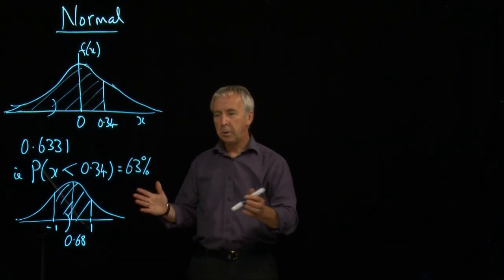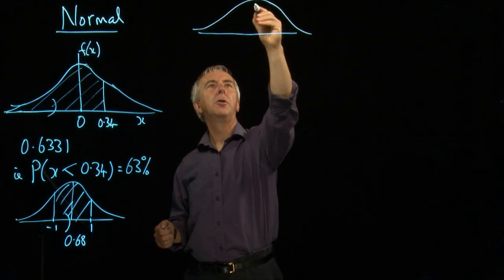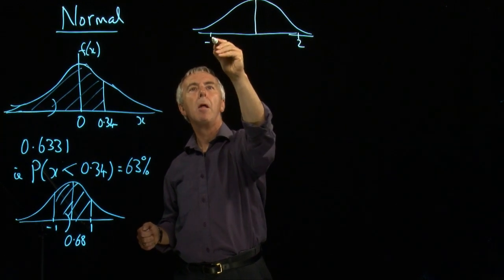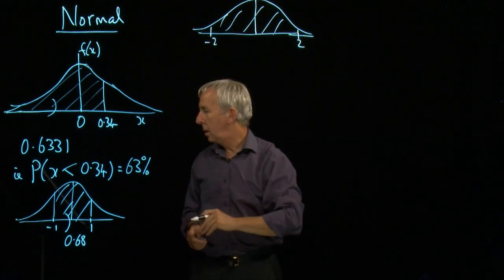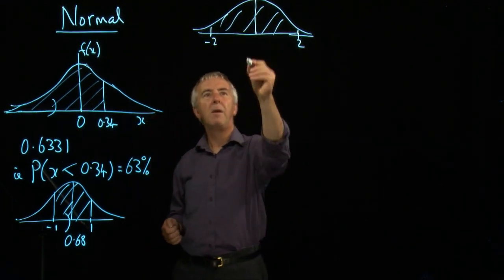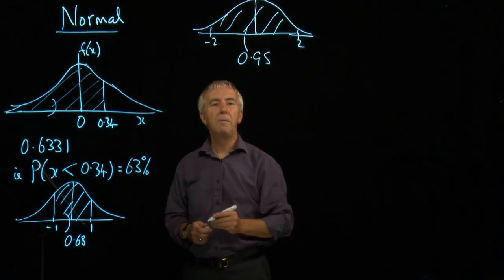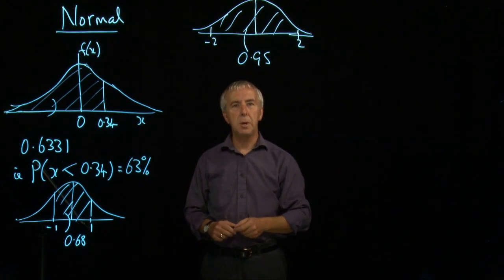And we can similarly look at what happens for two standard deviations either side of the mean. And we then get the percentage of 95% or 0.95. 95% of the population are within two standard deviations of the mean.